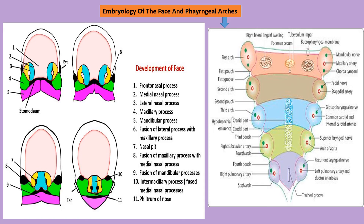For formation of the face: the first arch gives rise to maxillary and mandibular processes. Maxillary processes form the upper cheek region and most of the upper lip, while the mandibular process forms the lower lip and the lower one-third of the face. The frontonasal process is formed with the growth of the forebrain; two medial nasal processes merge to form the frontonasal process, which forms the philtrum of the upper lip. Nasal placodes arise from either side of the frontonasal process and form the medial nasal processes, which create the bridge of the nose, nostrils, and upper lip philtrum. Lateral nasal processes form the sides — the alae or wings of the nose.